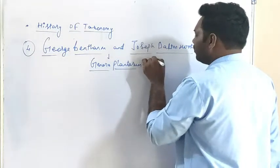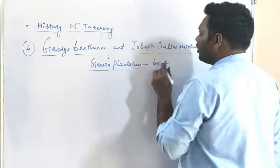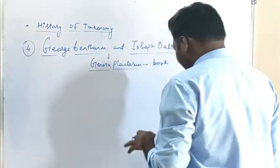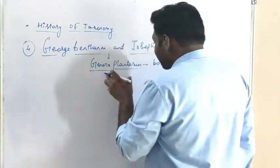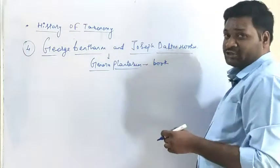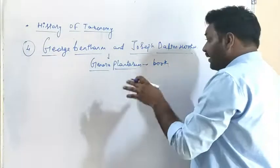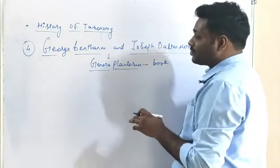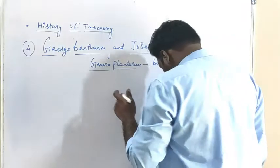In their book Genera Plantarum, they gave the biggest natural classification system of kingdom Plantae. The Spermatophyta, having 202 families, were classified into three divisions.